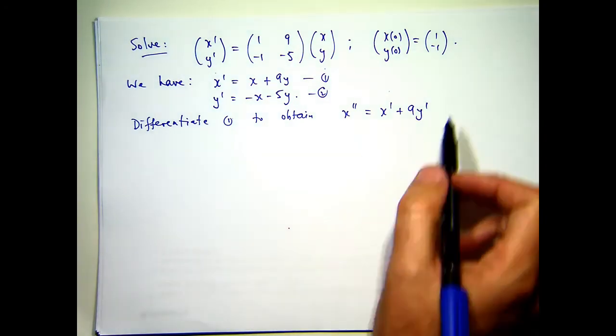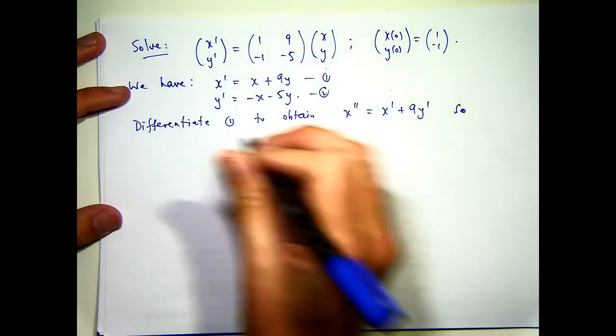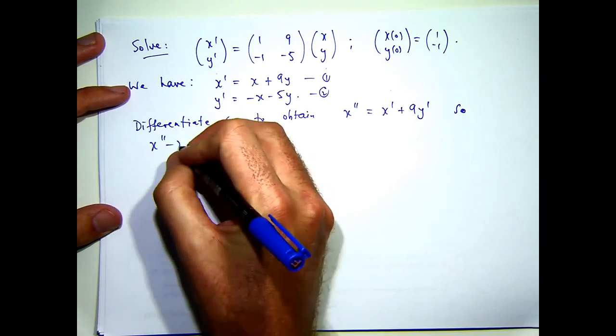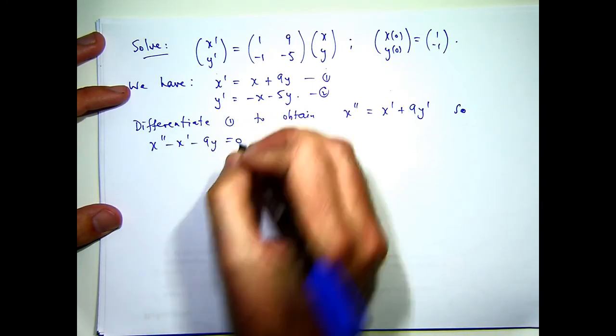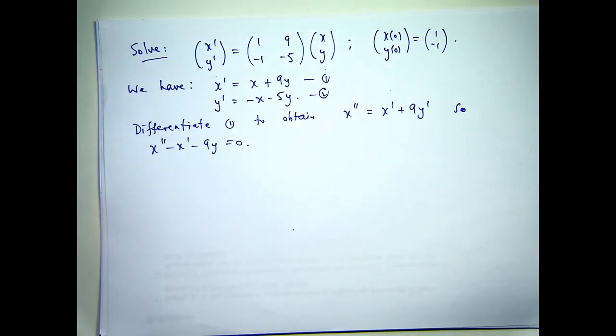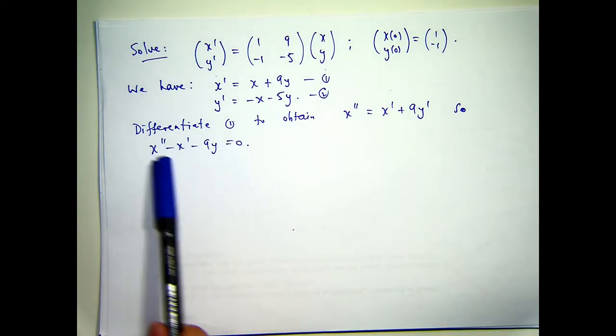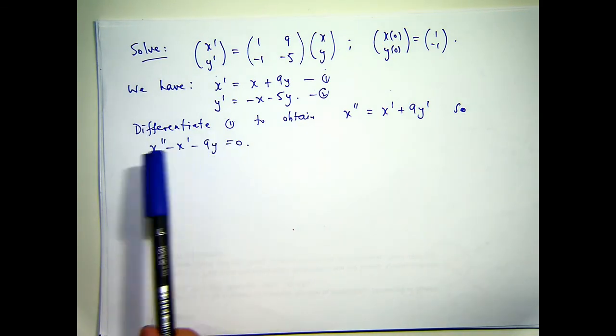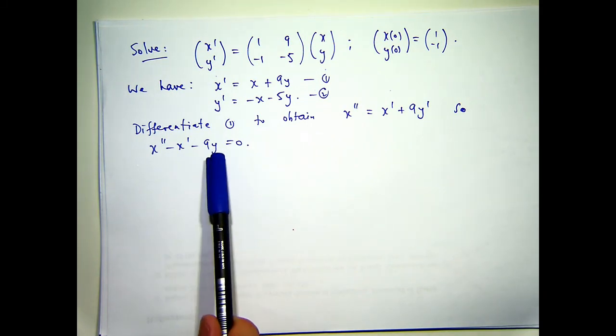So if I rearrange this, I'll get the following. Now, this is almost a second-order problem only in x and x prime and x double prime, except for this y.